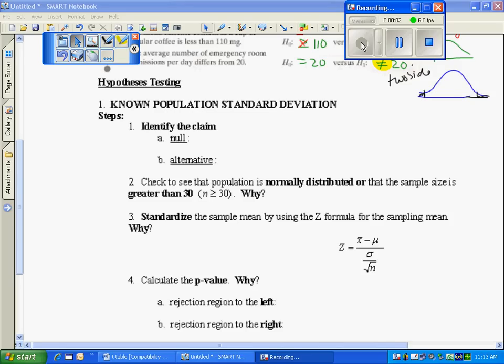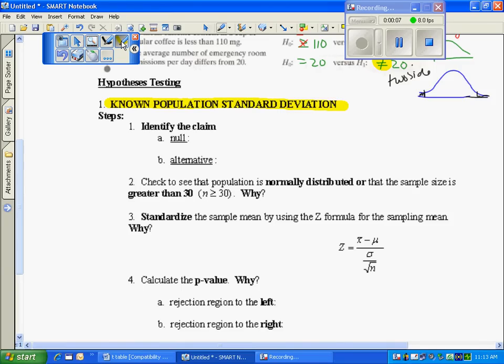In the second lecture for Chapter 10, we'll be looking at hypothesis testing, but here's the key: a known population standard deviation. That is rarely going to be the case, but we will take a look at examples when I know the standard deviation of the population.